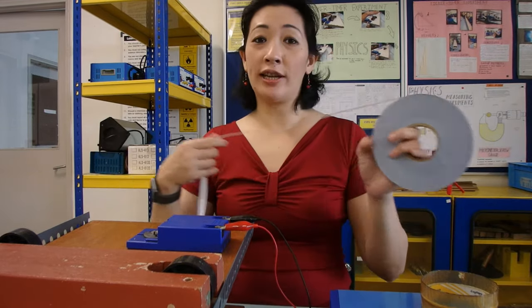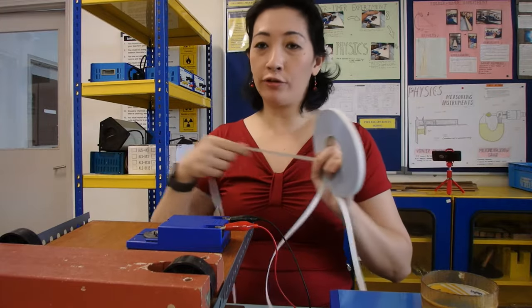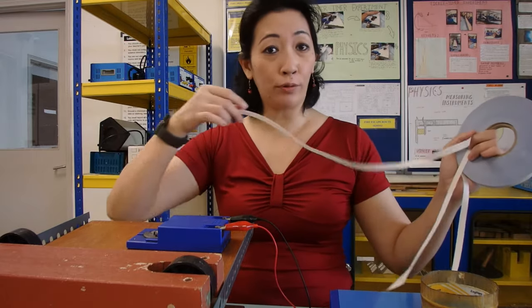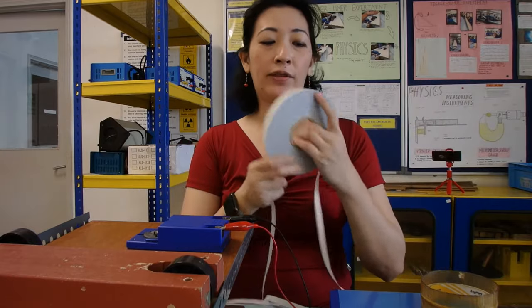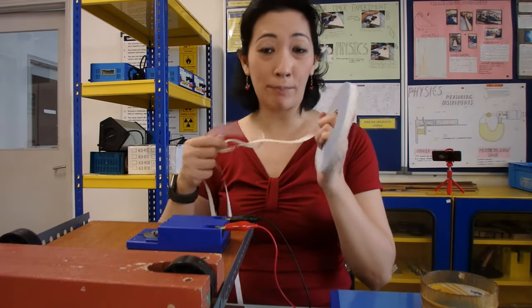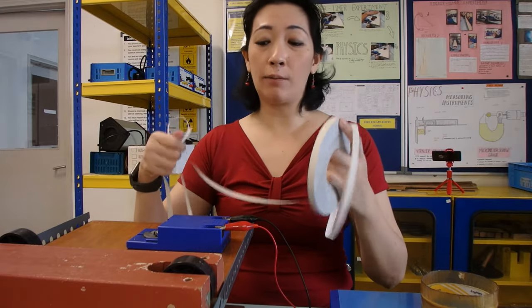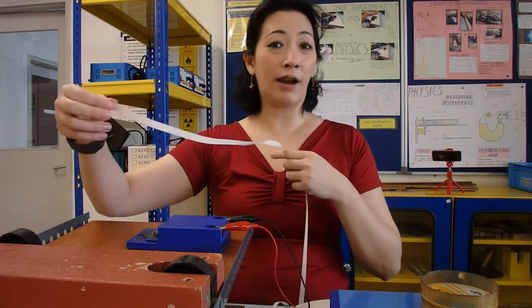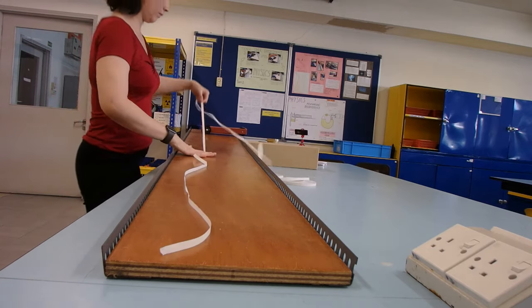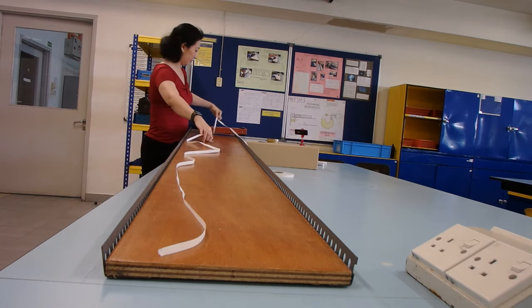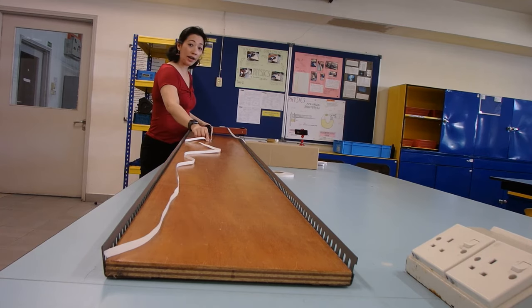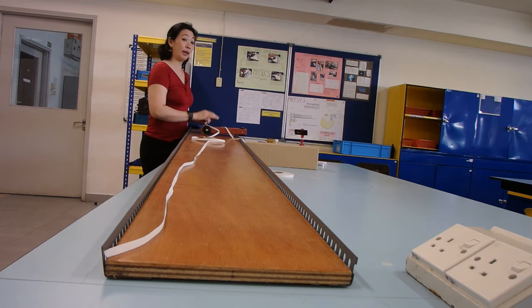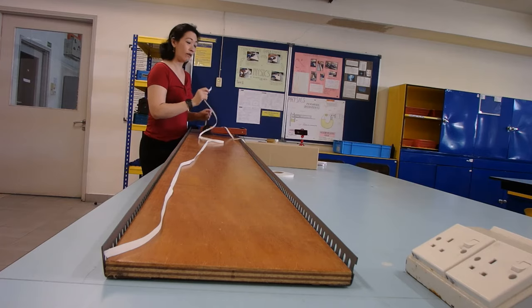For the ticker tape, my suggestion is cut out the length of the ticker tape first before you start the experiment. Because if you leave it in a roll, as the trolley moves down, you need the trolley to pull the ticker tape through the ticker timer. If the paper is stuck, it's going to hamper or stop the trolley from being able to measure the motion properly. Try to get tape as long as or slightly longer than the ramp. Having a free piece of tape will ensure that the trolley will be able to move freely and will get the most accurate measurement of its motion.